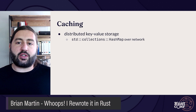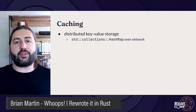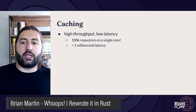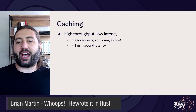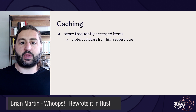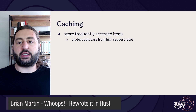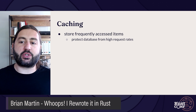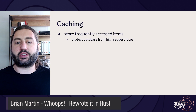This talk is framed around caching, specifically distributed key-value storage. You can think of it as the standard library's hash map, but over the network. Cache services are very high throughput and low latency — a single core can do around 100,000 requests per second with sub-millisecond latencies. Caches store frequently accessed items so we don't need to ask the database for the same thing again and again.